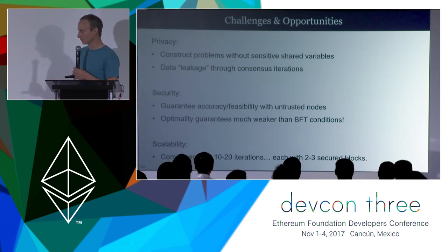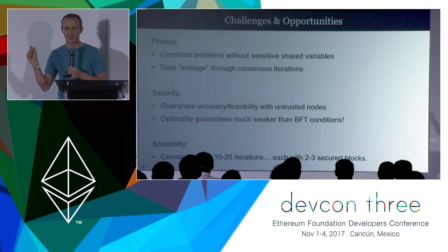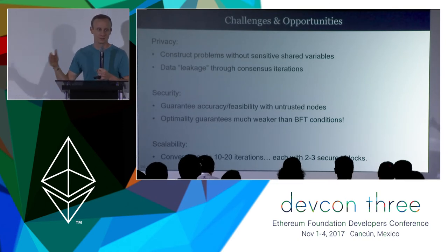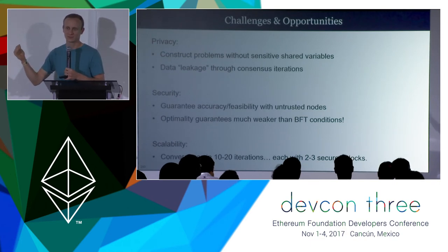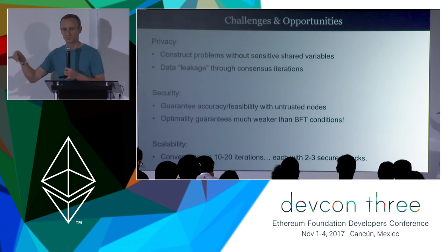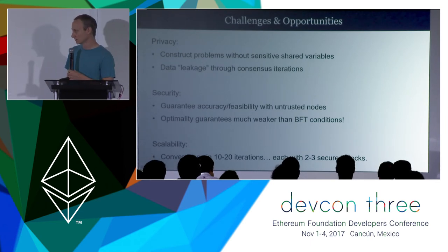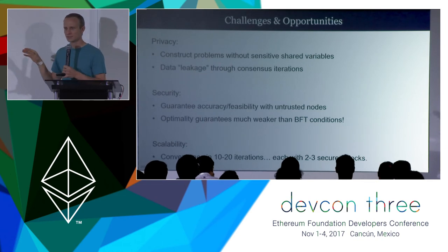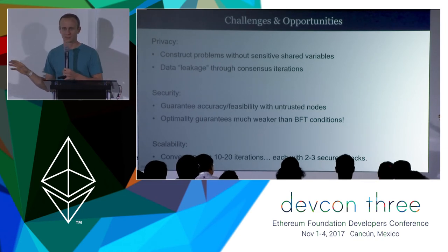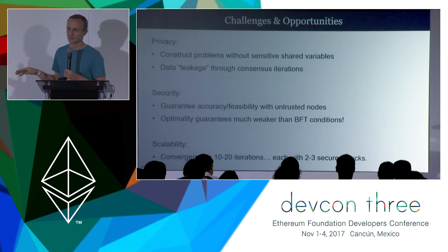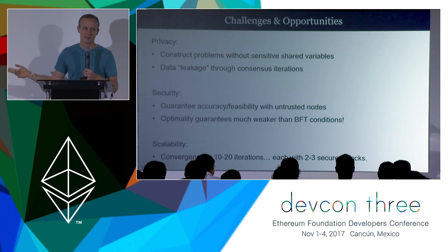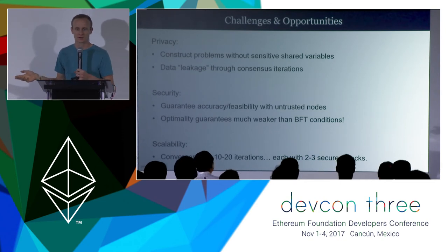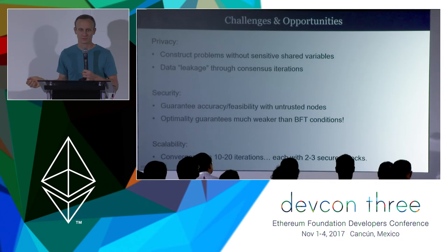Scalability: currently looking at converging in about 20 iterations of the system. Each of those iterations requires update steps or variable updates sent to the aggregator node, the aggregator smart contract performing that update, and then broadcasting that back. So each of those is at minimum two to three secured blocks. In net, this could be a relatively long, slow process. That's an area where looking at Plasma or other ways of speeding this up could improve the system.